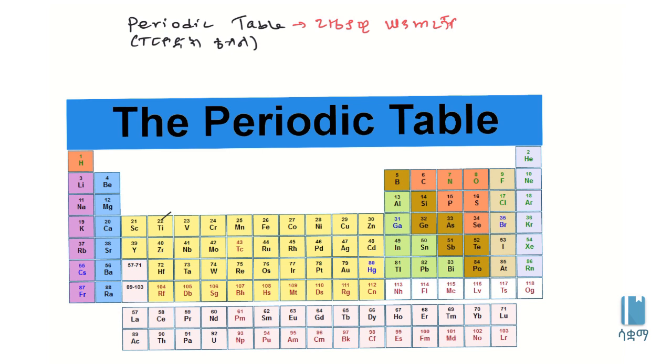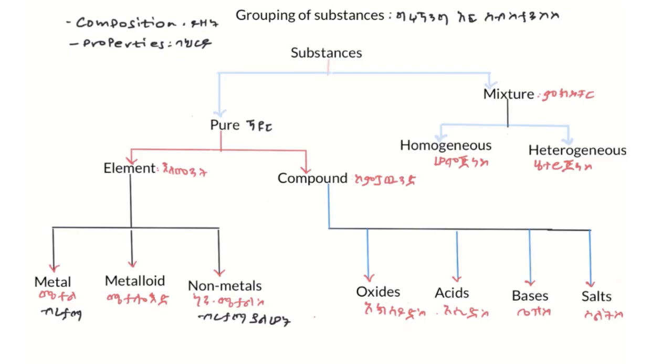Hi, salam. Today I will teach you about the periodic table. We'll look at the periodic table and grouping of substances. The periodic table helps us classify elements into metals, non-metals, and metalloids.